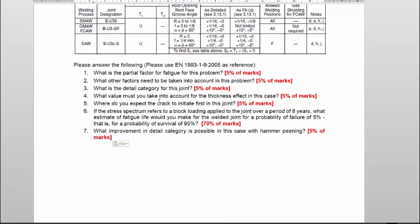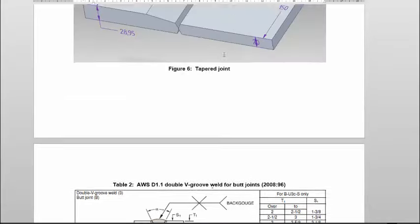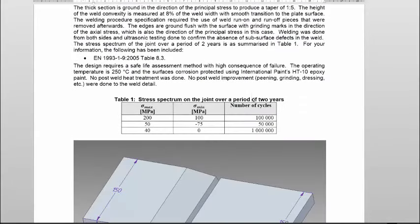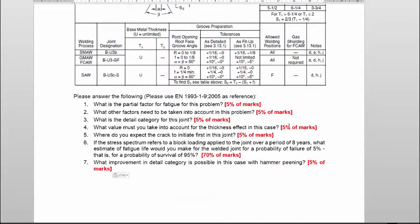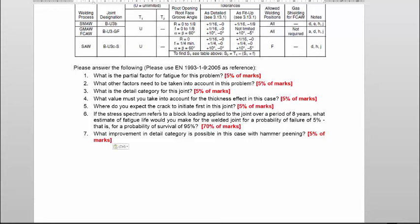So, if the stress spectrum refers to a block loading applied to the joint over a period of two years. Oh sorry, eight years. I can see eight years now and we've said here this was two years. So, maybe there will be a confusion there, but I'll be sensitive for that confusion. But they say here, if the stress spectrum refers to a block loading applied to the joint over a period of eight years, what estimate of fatigue life would you make for the welded joint for a probability of failure of five percent? That is for a probability of survival of 95 percent.